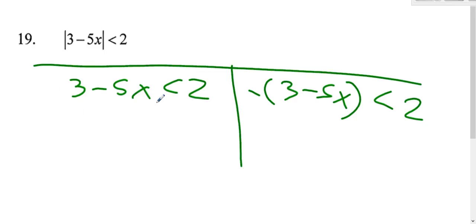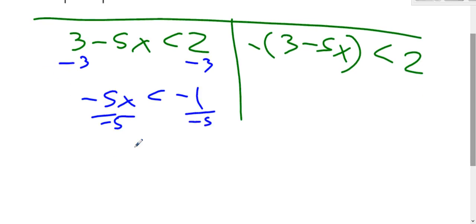So solve this inequality on the left. Subtract 3, subtract 3. Divide by negative 5. Since we divided by a negative, we need to flip the inequality, and that's positive one-fifth.